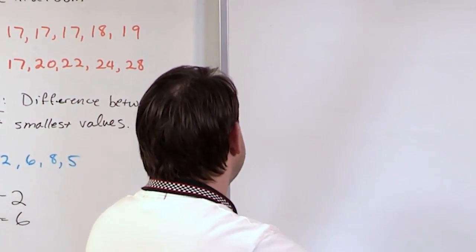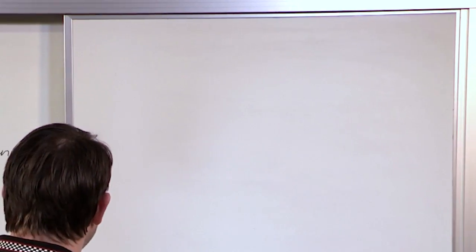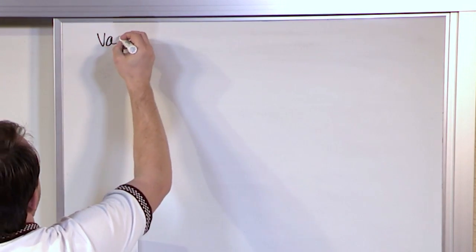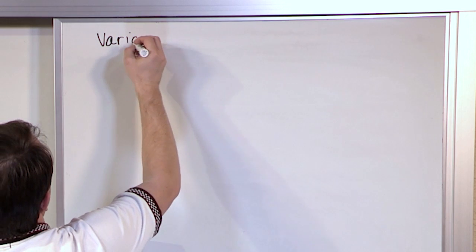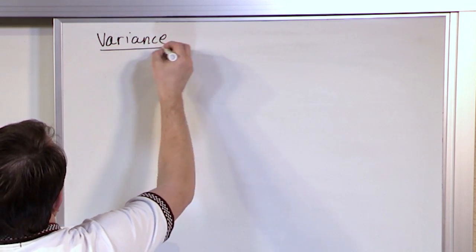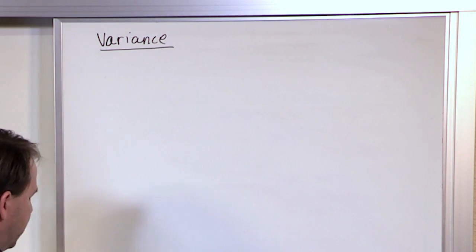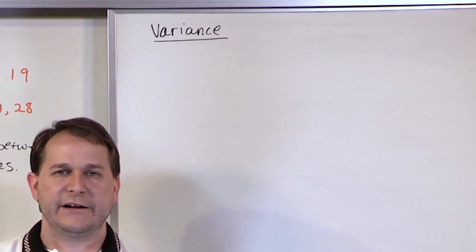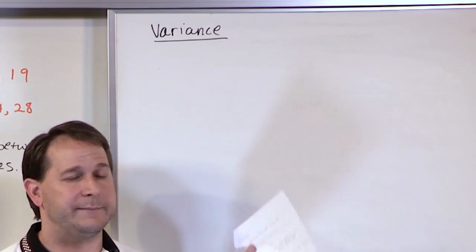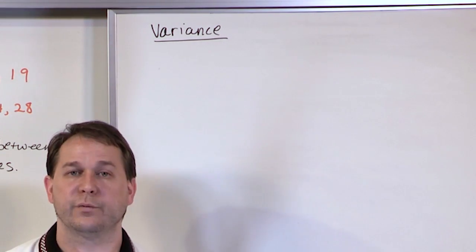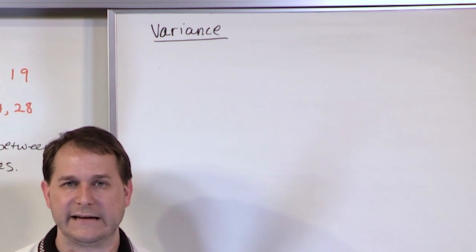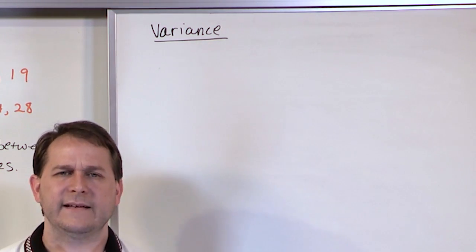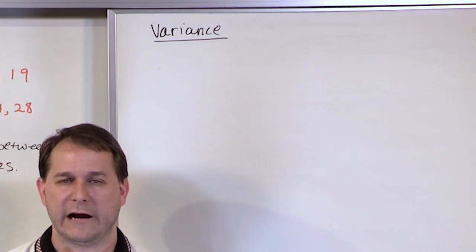The answer to that question is something extremely important in statistics, and that is the concept of variance. We've done the range and figured out how to do that. Now we're going to calculate something called the variance, which is going to tell us how spread apart the data is in a way that's not quite as susceptible to outliers.